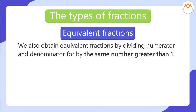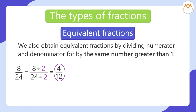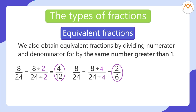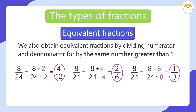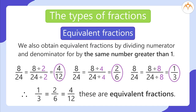We also obtain equivalent fractions by dividing numerator and denominator by the same number greater than 1. For example: 8/24 ÷ 2 = 4/12; 8/24 ÷ 4 = 2/6; 8/24 ÷ 8 = 1/3. Therefore, 1/3 = 2/6 = 4/12 — these are equivalent fractions.